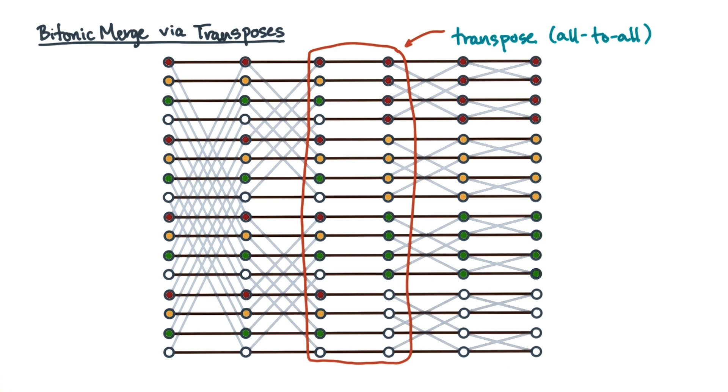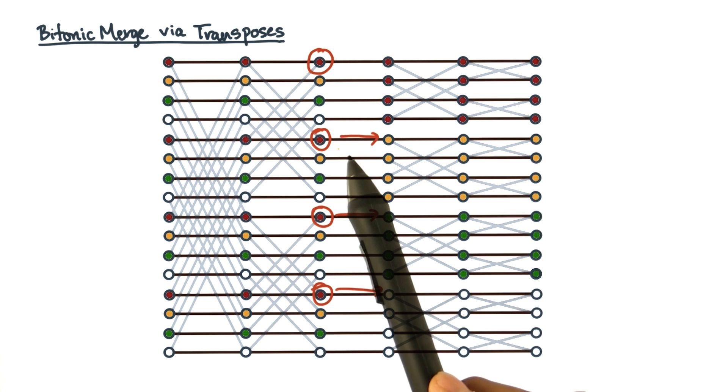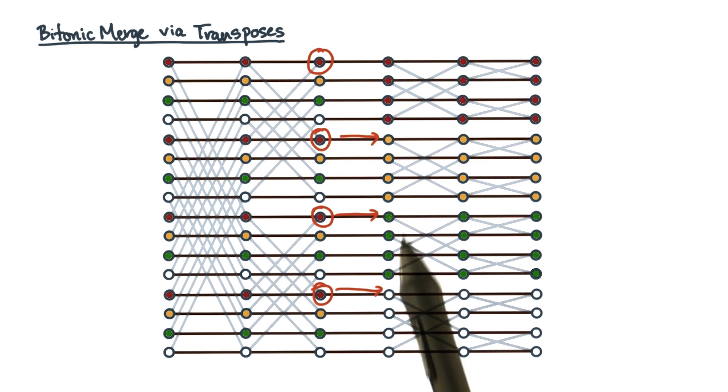You can view the transpose as either a matrix transpose or as an all-to-all personalized exchange. Take the first process for instance. It has to send p minus 1 messages, each of size n over p squared.